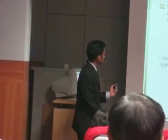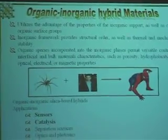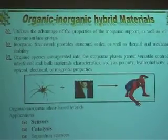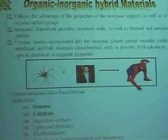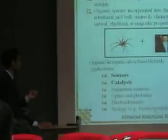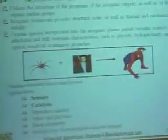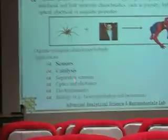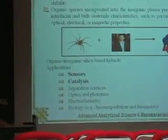Organic-inorganic hybrid materials combine the best of both components. Inorganic materials provide thermal as well as mechanical stability. Organic species can provide porosity, hydrophobicity, optical, electrical, and magnetic properties. This is similar to Spiderman — when a man combines with a spider to form Spiderman, he has the advantages of both spider and man. There are many applications like sensors, catalysis, and electrochemistry. I have used two applications: sensors and catalysis.